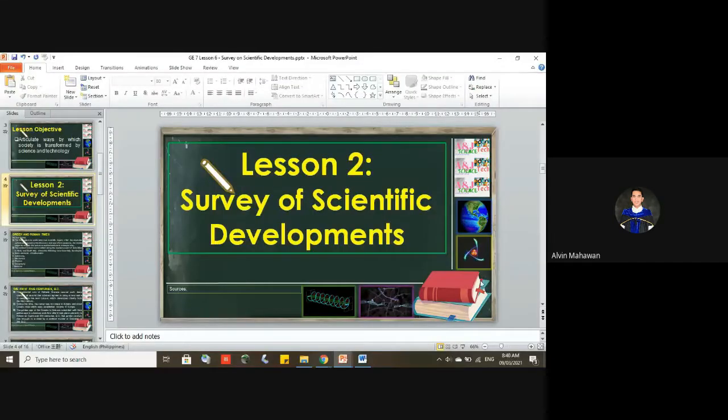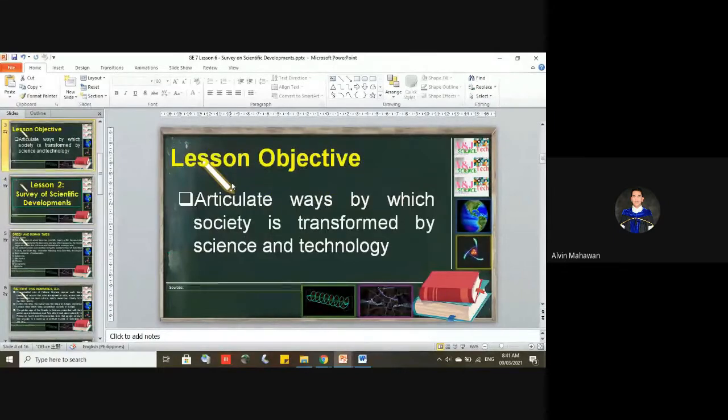So we are now dealing with lesson 2 on survey of scientific development. We are going to discover and uncover things concerning those developments in science and technology. We'll learn who is involved, those recorded persons, and their contributions to science and technology. But before that, before we go down to our discussion, allow me to present to you the lesson objective of this topic. This is actually lesson 2, class.